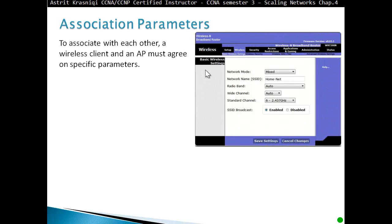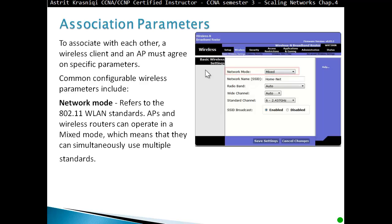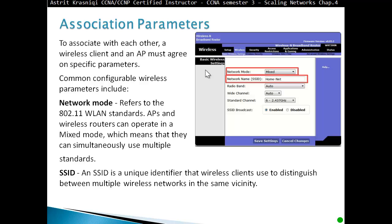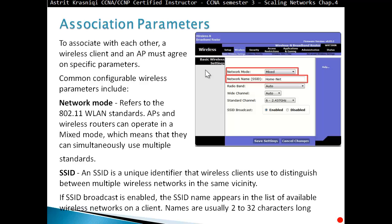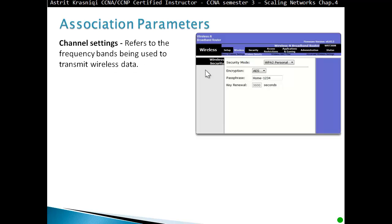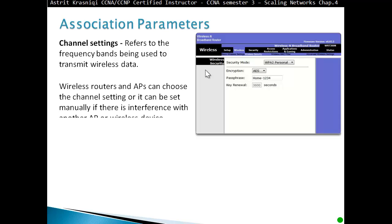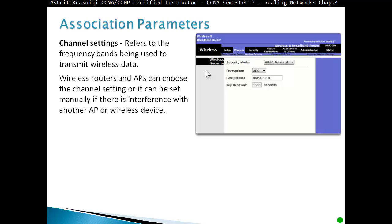To associate with each other, a wireless client and access point must agree on specific parameters. Common configurable wireless parameters include network mode, which refers to the 802.11 WLAN standards. Access points and wireless routers can operate in mixed mode, which means they can simultaneously use multiple standards. If SSID broadcast is enabled (which can be disabled or hidden), the SSID name appears in the list of available wireless networks on the client. SSID names are usually up to 32 characters long. Channel settings refer to the frequency band being used to transmit wireless data. Wireless routers and access points can choose a channel setting or it can be set manually if there is interference with another access point or wireless devices.